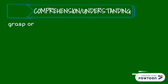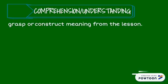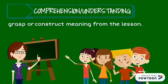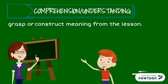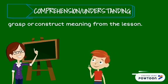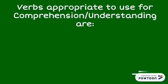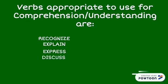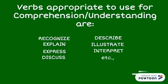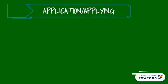In comprehension, or understanding, students should have the ability to grasp or construct meaning from the lesson. For example, in Miss Bella's class, students were asked to recite, and JC was called. Miss Bella told JC to describe the process of fertilization. Verbs appropriate to use are: recognize, explain, express, discuss, describe, illustrate, interpret, etc.